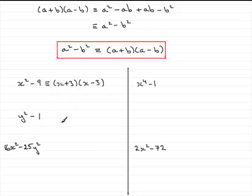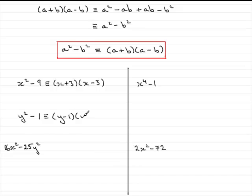In this example, y squared minus 1. This is the difference of two squares. This is the square of y, and 1 is the square of 1 — 1 squared is 1. So the a would correspond to y and the b would correspond to 1. So this is identical to y plus 1 times y minus 1, or you could write it the other way around as y minus 1 times y plus 1.